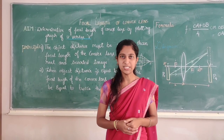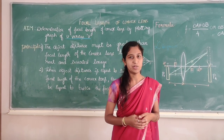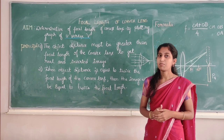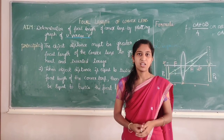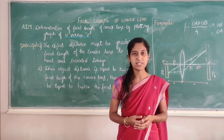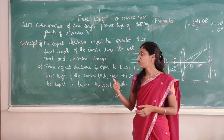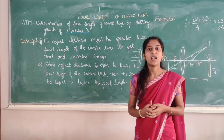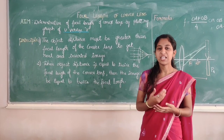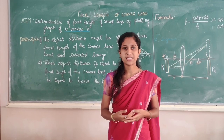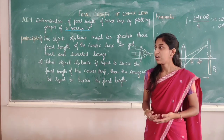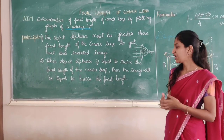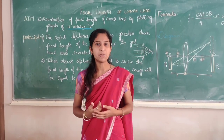As we studied some of the terminologies, let us look into the aim of this experiment. The aim is the determination of focal length of a convex lens by plotting a graph of U versus V, where U represents the object distance and V represents the image distance. The principle states that the object distance must be greater than the focal length of the convex lens to get a real and inverted image. When the object distance is equal to twice the focal length, then the image distance will also be equal to twice the focal length.